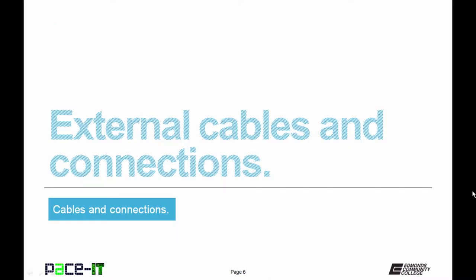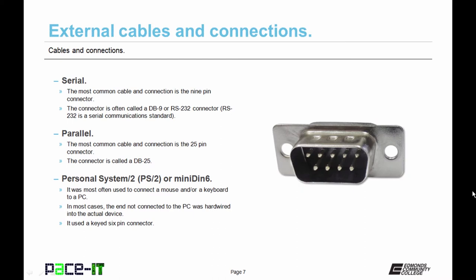Now let's move on to external cables and connections. Following the same pattern, we're going to begin with the old and work our way towards the new. And we begin with the serial cable and connection. The most common cable and connection is the nine pin connector. This connector is often called a DB9 or it's often called an RS232 connector. That's after the RS232 serial communication standard.